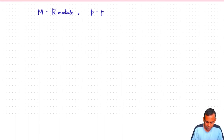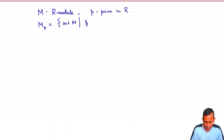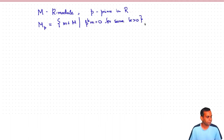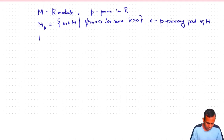Remember primary decomposition: if M is an R-module, R a principal ideal domain, and P is a prime element of R, then we define M_P to be the set of m in M such that P^k · m = 0 for some positive integer k. This is called the P-primary part of M. M is said to be P-primary if M equals M_P.